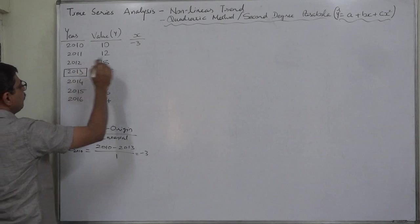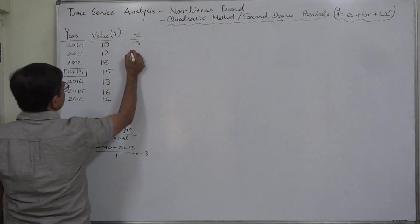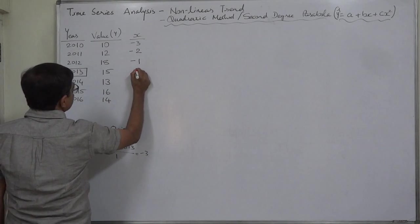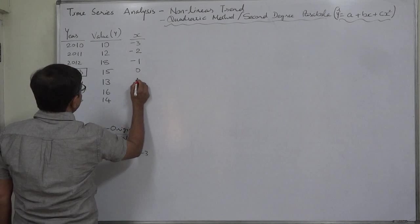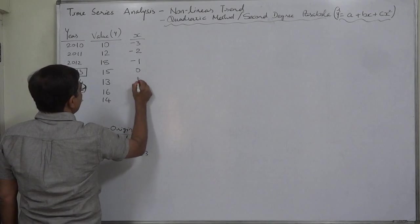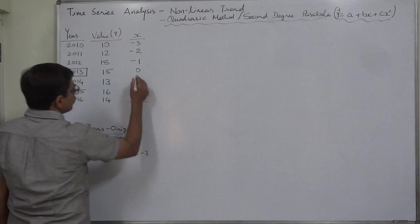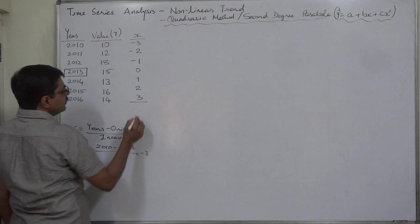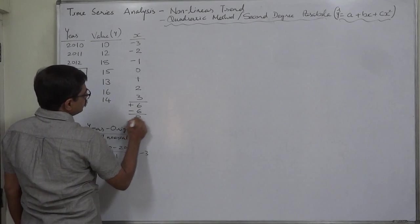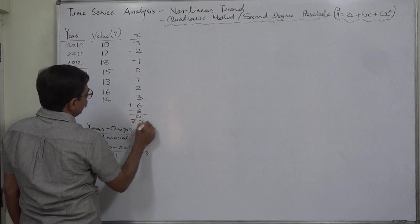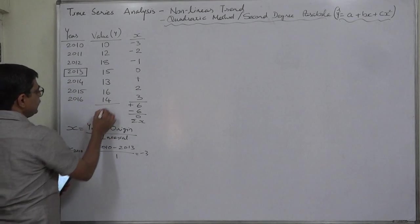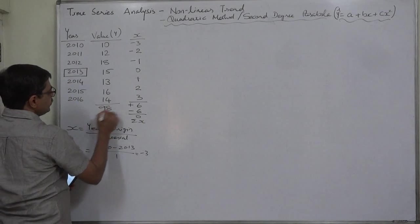Similarly, 2011 minus 2013 gives minus 2, and in the same way we get minus 1, 0, 1, 2, and 3. The positive sum is 6 and the negative sum is 6, so sigma x comes to 0. The summation of y is 98.